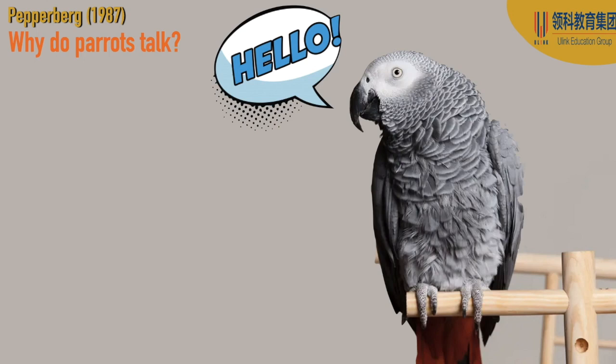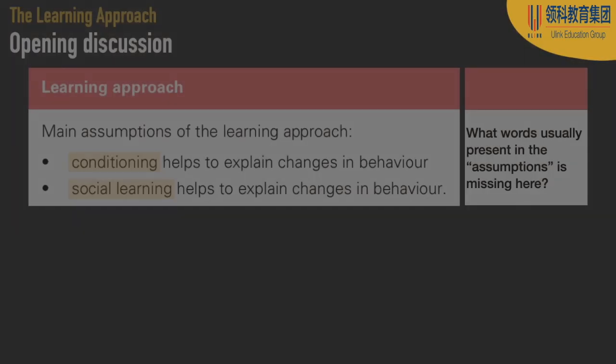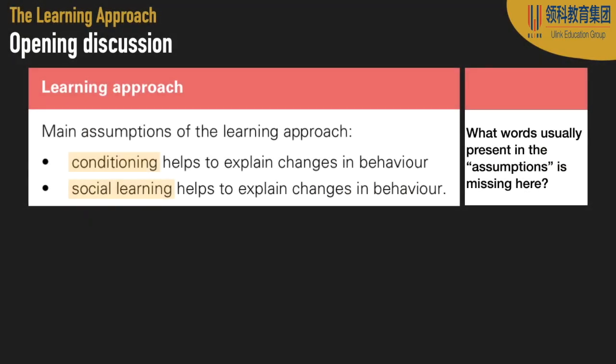Do animals make human sounds because they have been conditioned to do so, or is it more about social learning? This harkens back to the main assumptions of the approaches. The learning approach in particular has to do with behavior modification, and that could be accomplished two ways: one is through conditioning — that includes operant and classical conditioning — or, as Bandura pointed out, it could also be gained through modeling, i.e. social learning.